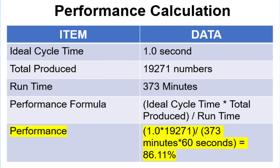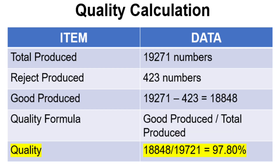For Performance: Ideal Cycle Time = 1 second, Total Pieces Produced = 19,271, Run Time = 373 minutes. Performance = (Ideal Cycle Time × Total Produced) ÷ Run Time. Calculating this gives us 86.11%.